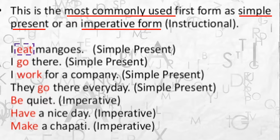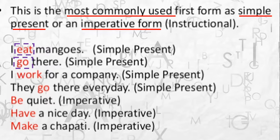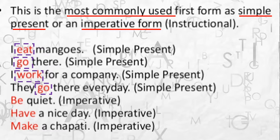Let's look at some examples. 'I eat mangoes' — simple present, and 'eat' is found under E in the dictionary. 'I go there' — 'go' is the base form; when you add things to it, it becomes 'going,' 'gone,' or 'goes.' 'I work for a company' — simple present, meaning at present I work for a company. 'They go there every day' — again simple present. So these base forms of verbs are used in simple present tenses.